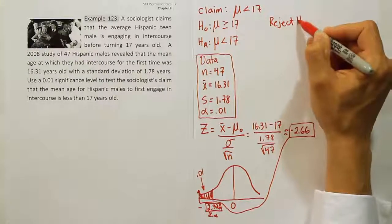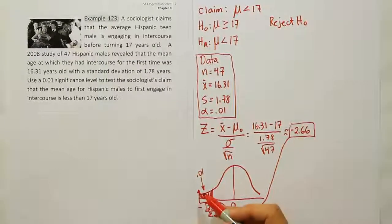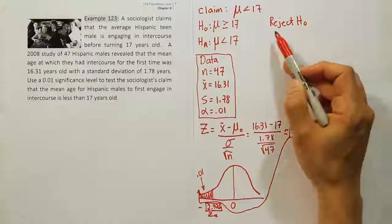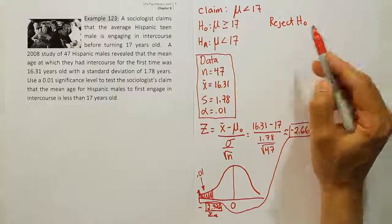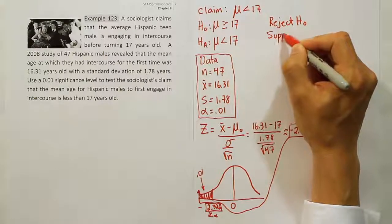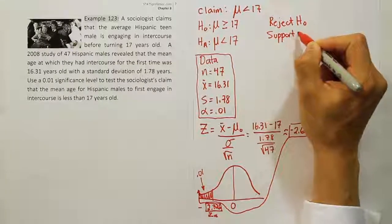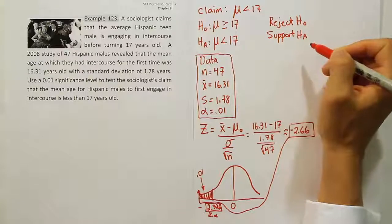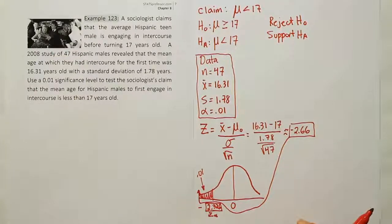Reject the null hypothesis. Remember, anytime you land in the shaded area, you're rejecting the null. It's that hypothesis we're always testing. So we reject the null and with that goes the idea of supporting the alternative. So we reject the null, we support the alternative.